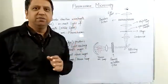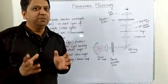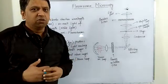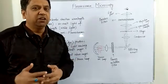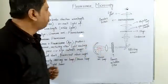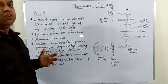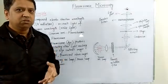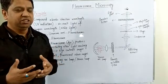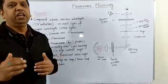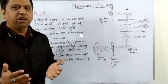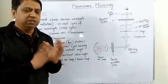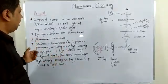As the name describes, fluorescence microscopy is based on the image obtained by fluorescent light. The principle is that there are some compounds which absorb UV radiation — radiation of small wavelength — and they re-emit light of higher wavelength in the visible range. This phenomenon is known as fluorescence.